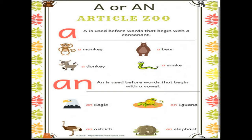Now I will tell you about AN — where we will use it. AN is used before words that begin with a vowel — means jis spelling ka pehla letter vowel ho, usse pehle hum AN lagate hain. For example, 'eagle' ka pehla letter E hai, aur E vowel hai, isliye eagle se pehle hum AN lagaenge — an eagle. Isi tarah, iguana, ostrich, and elephant ki spelling ka pehla letter vowel hai — an iguana, an ostrich, an elephant.